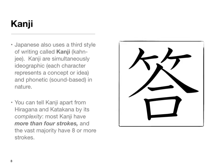Modern Japanese also uses a third style of writing called kanji. Kanji are simultaneously ideographic — that is to say each character represents a concept or an idea — and are also phonetic in nature, meaning they have a pronunciation that goes along with them as well. You can tell kanji apart from hiragana and katakana by its complexity. Most kanji have more than four strokes, and the vast majority have eight or more strokes. A stroke, when writing in Japanese — whether hiragana, katakana, or kanji — is defined as a movement of your writing instrument until you stop writing, lift it up, and begin another one. A single stroke can include changes of direction.